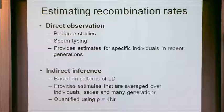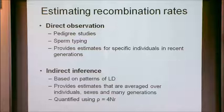We generally quantify that indirect estimate of recombination using the compound parameter rho, which is four times the effective population size times the recombination rate. It's a compound parameter because the LD patterns cannot be used to estimate either the actual recombination rate or the population size individually.